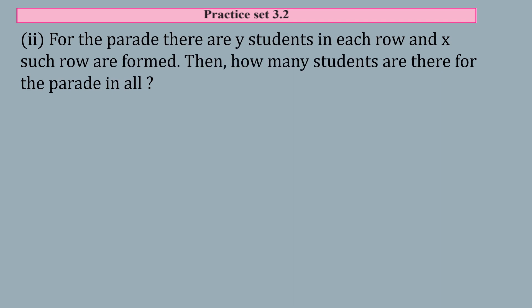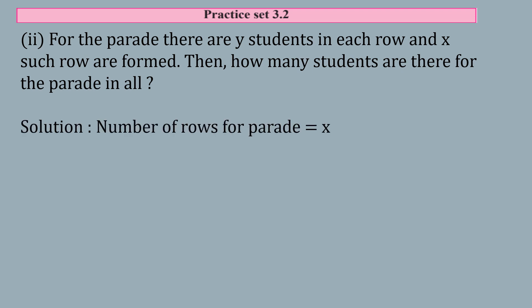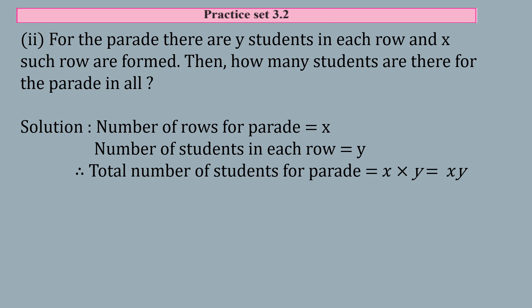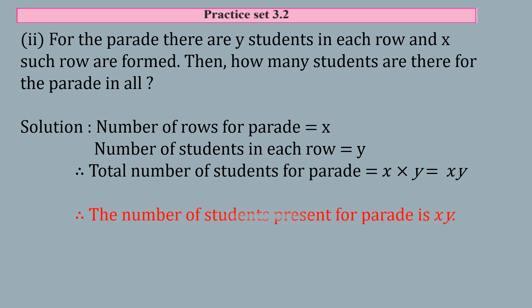Next question: For the parade, there are y students in each row and x rows are formed. Then how many students are there for the parade in all? Number of rows is x, number of students in each row is y. So total number of students equals x multiplied by y, that is xy. The number of students present for the parade is xy.